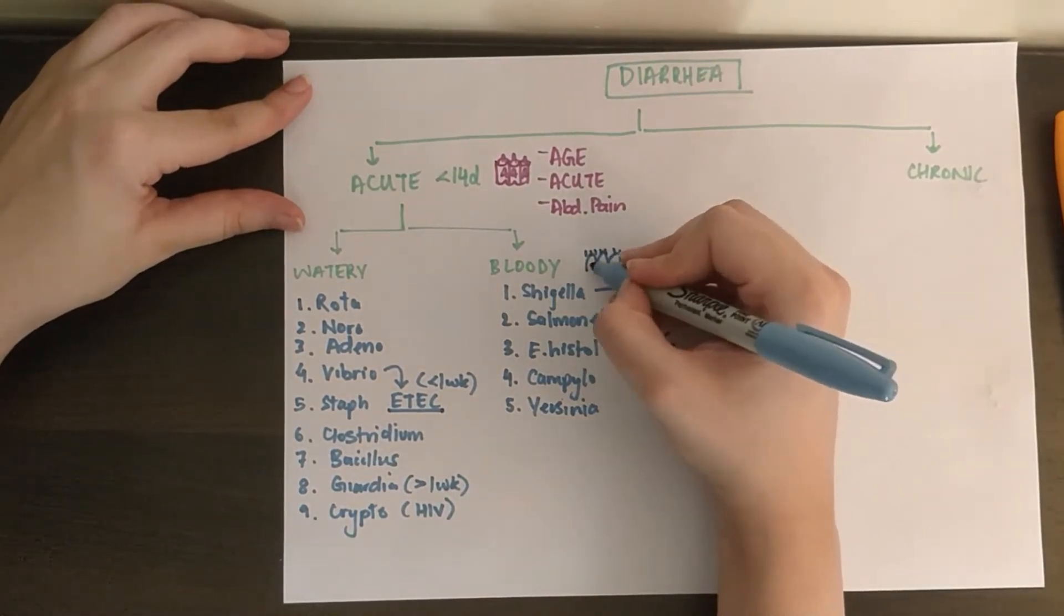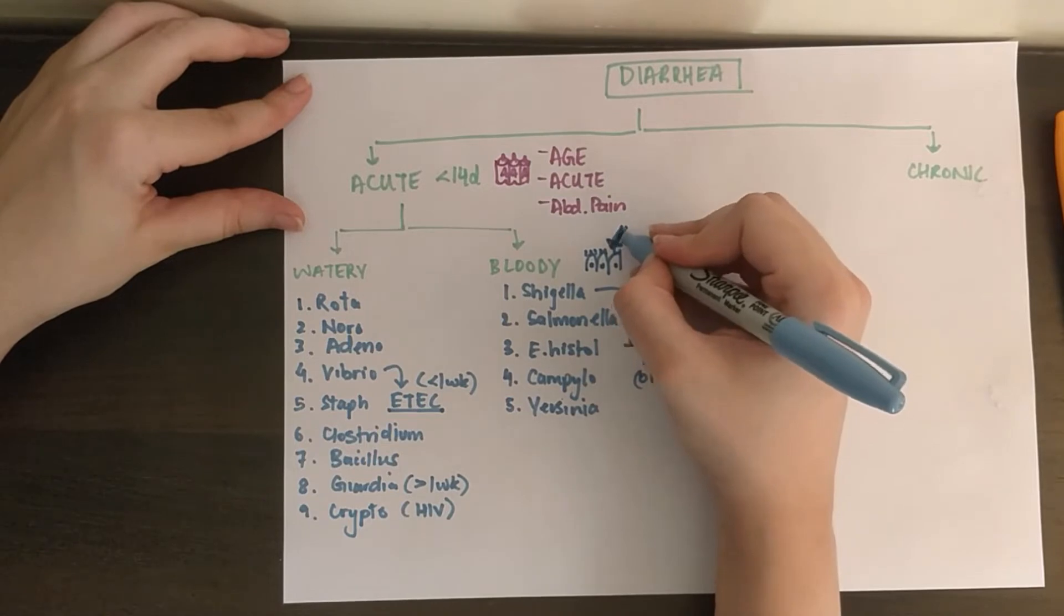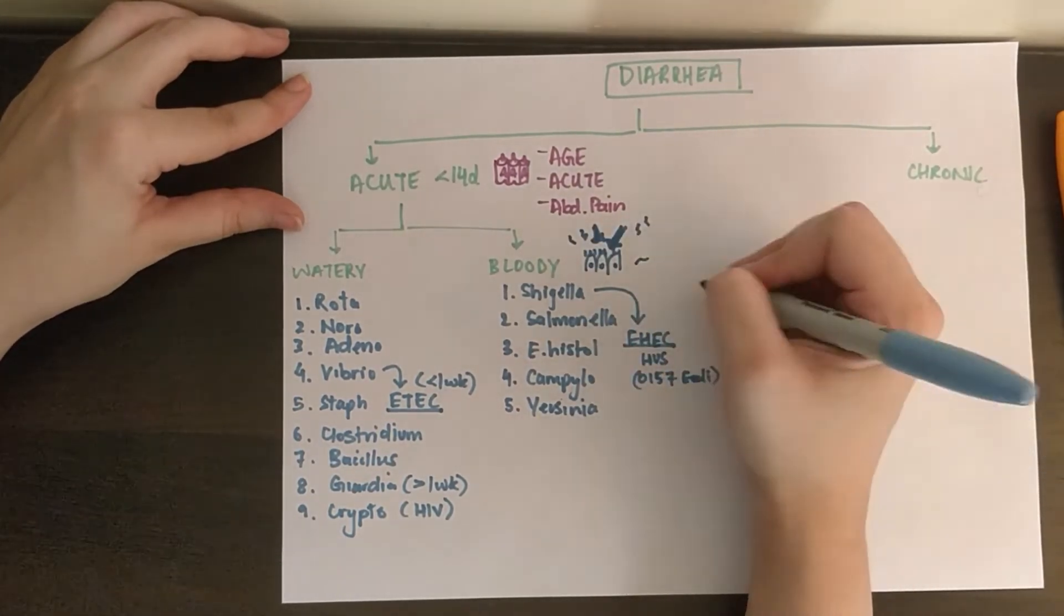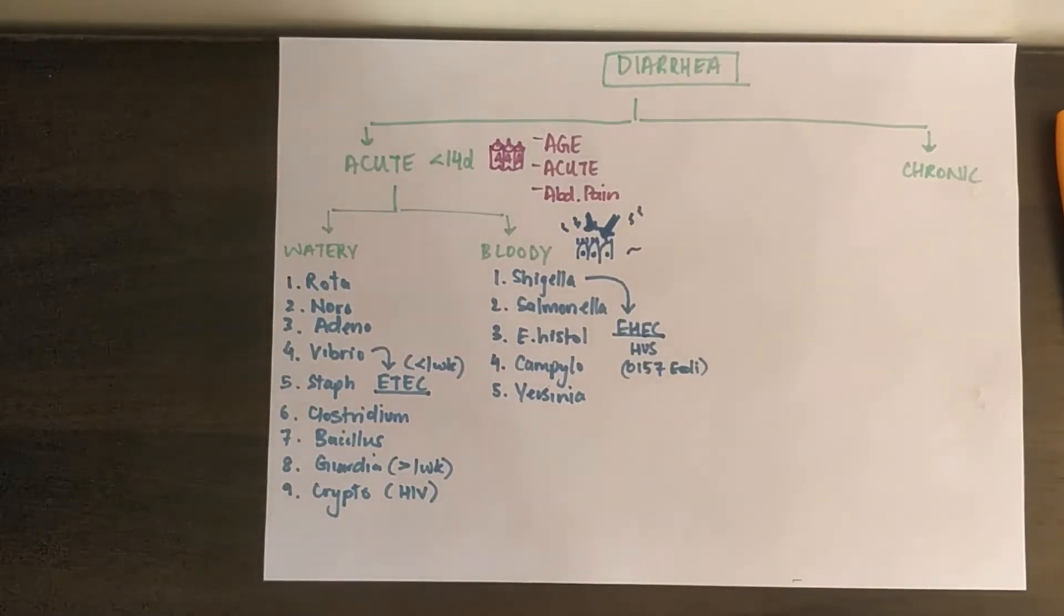Bloody diarrhea is inflammatory and invasive. It disrupts the mucosa, so inflammatory and invasive goes inside and causes bleeding.